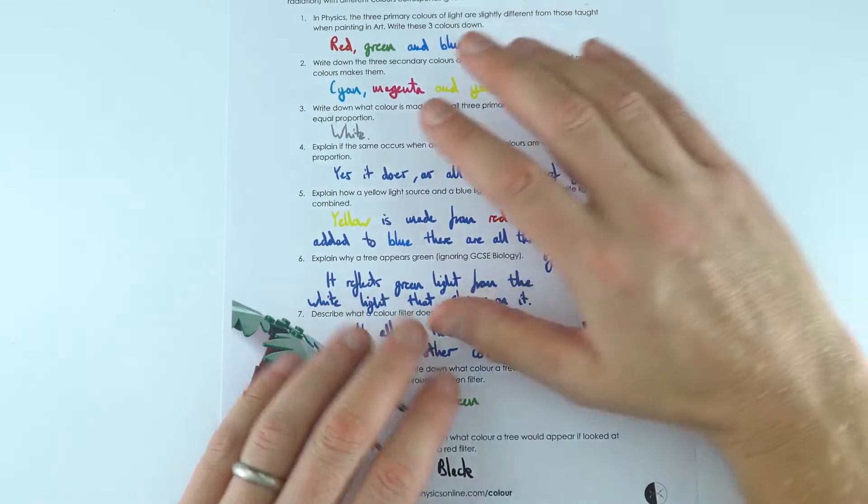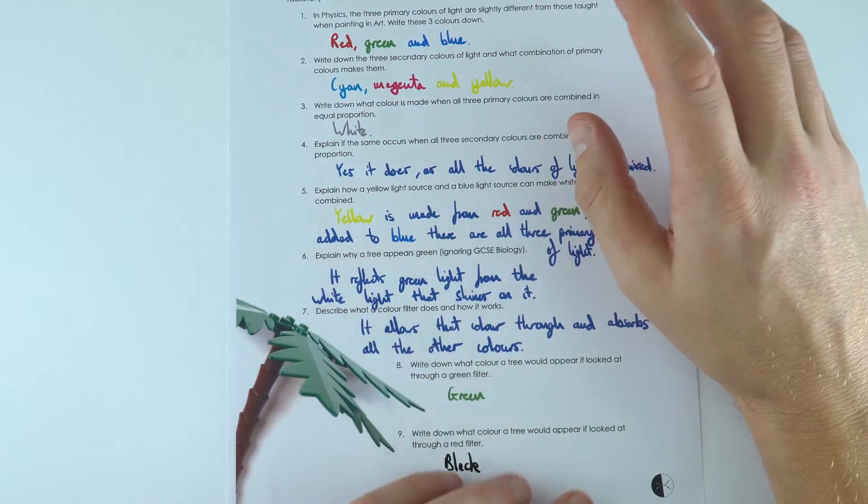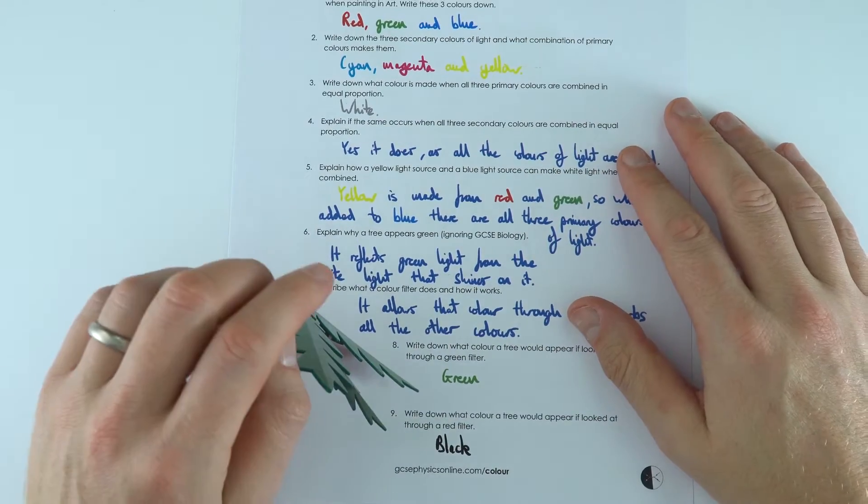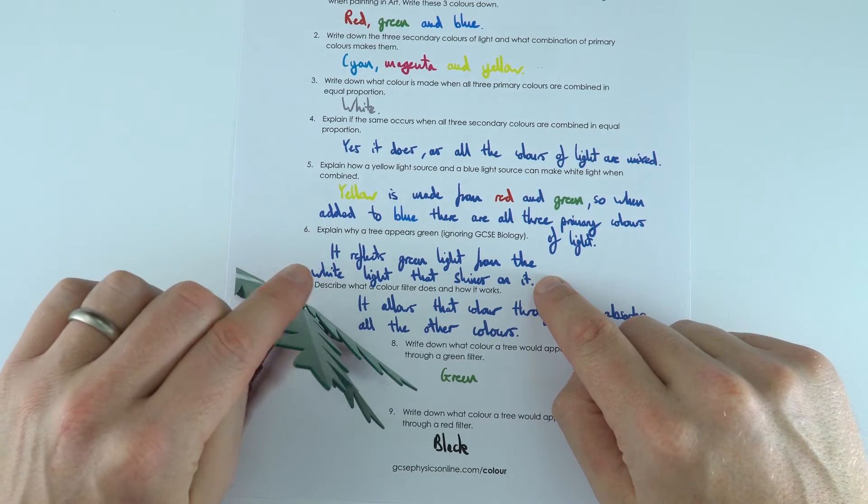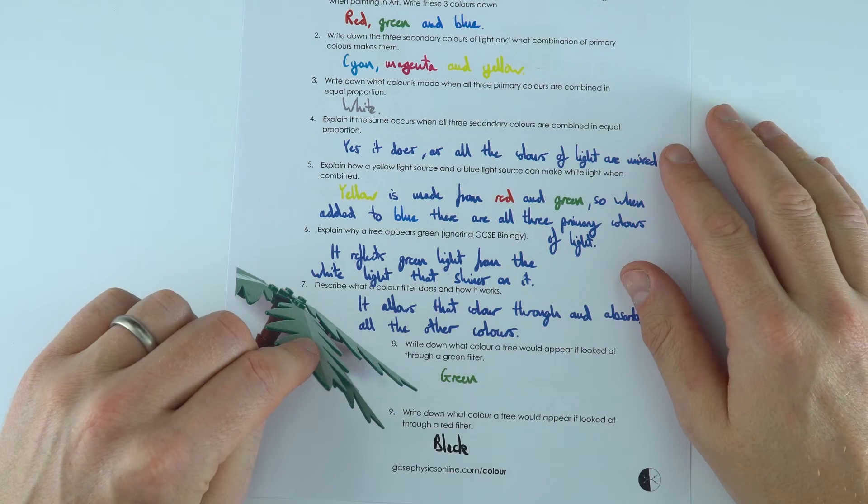But a tree appears green - again ignore biology, it's not as good as physics - basically with a tree it appears green because those leaves reflect the green light and they absorb all of the other colours of light.